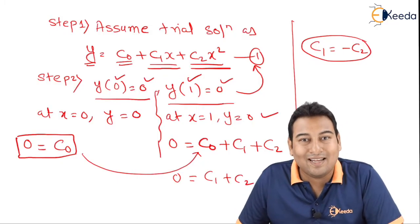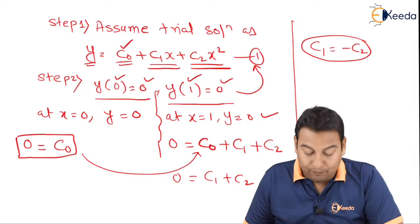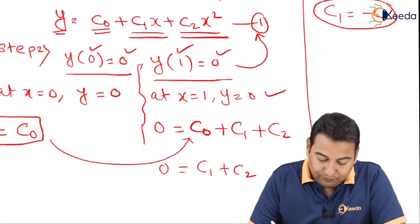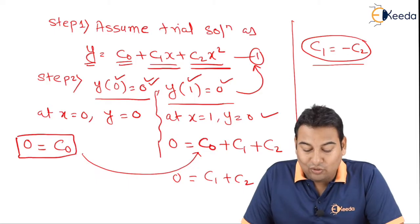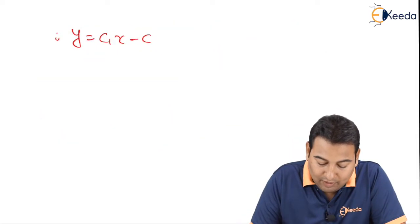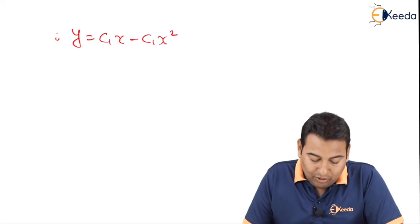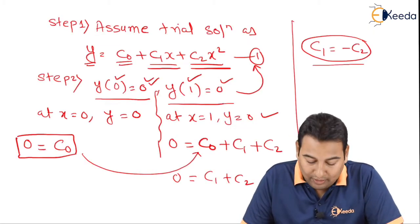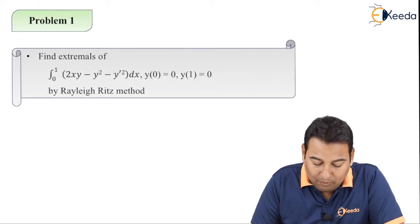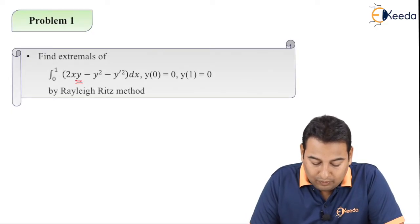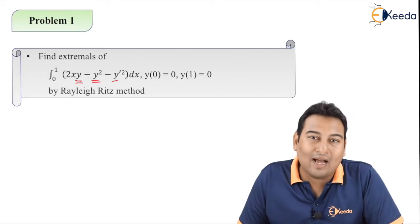Substituting these constants into equation 1: y = c0 + c1x + c2x². Since c0 = 0 and c2 = −c1, we get y = c1x − c1x². In Step 2 we also need to find y' and y'' as required. The given problem requires y² and y'², so we need y and y'.